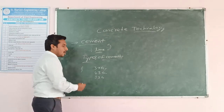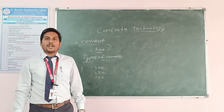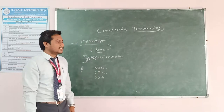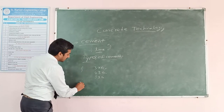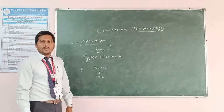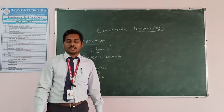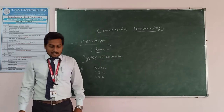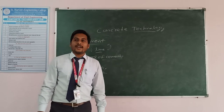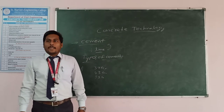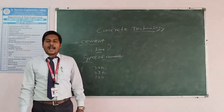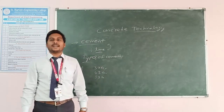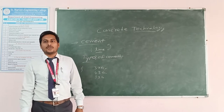We are having so many types of cement. The first one is Ordinary Portland Cement. The second one is Rapid Hardening Cement. Other types include Extra Rapid Hardening Cement, Sulfate Resisting Cement, Quick Setting Cement, Air Entraining Cement, and Colored Cement. Like this, we are having so many types of cement.